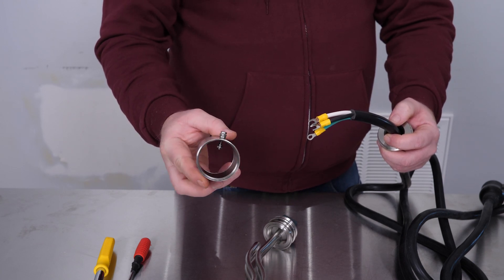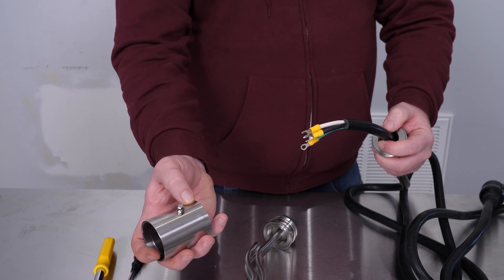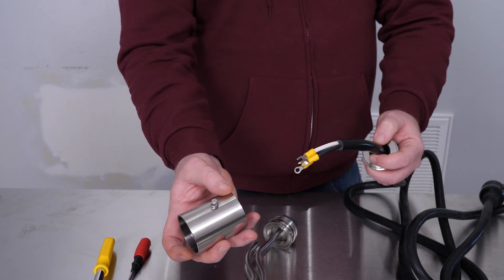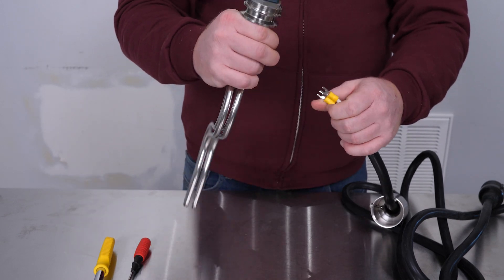Then slide on the sleeve. I like to install it so the shorter distance from the ground screw goes towards your cord grip. Slide that over, and now we'll wire the element.